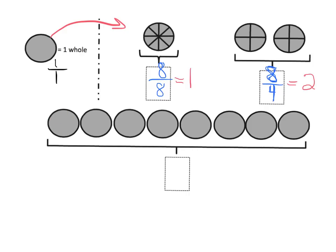So our denominator is a one, and our numerator — because we have eight of them, one, two, three, four, five, six, seven, eight — our numerator is eight. So we have eight wholes. That's how I say this: eight wholes, and that's equal to eight.